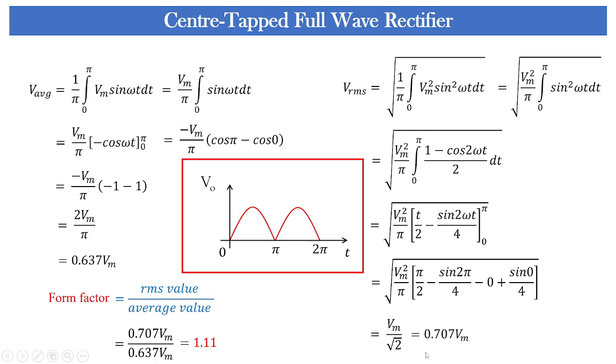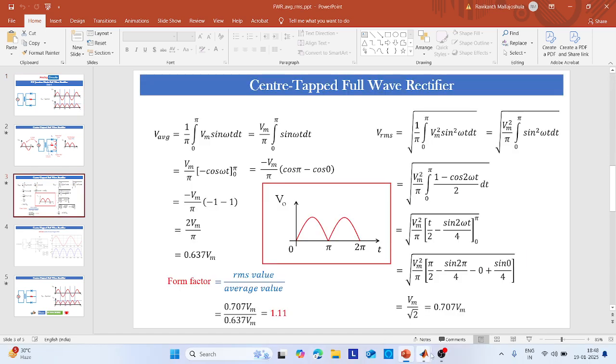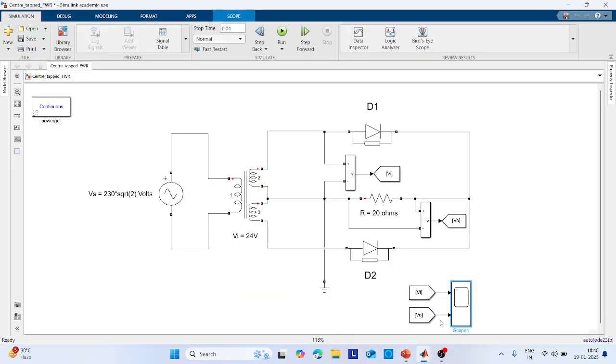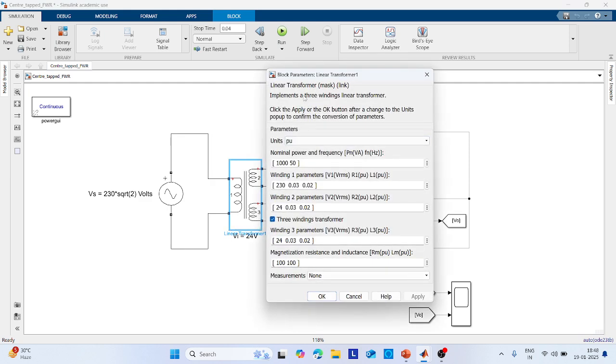Now if we want to see the output in MATLAB, in this MATLAB you can see I have selected a linear transformer which is also known as a step-down transformer. Why it is step-down you can see here the primary winding is 230 volts and the secondary winding is 24. So here you can see the secondary winding both are interconnected for center-tapped condition.